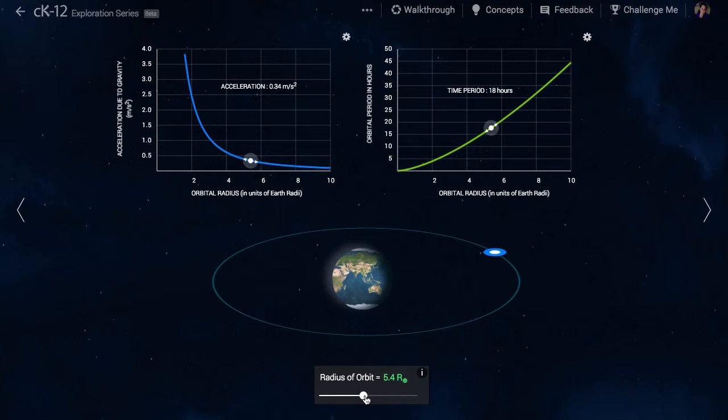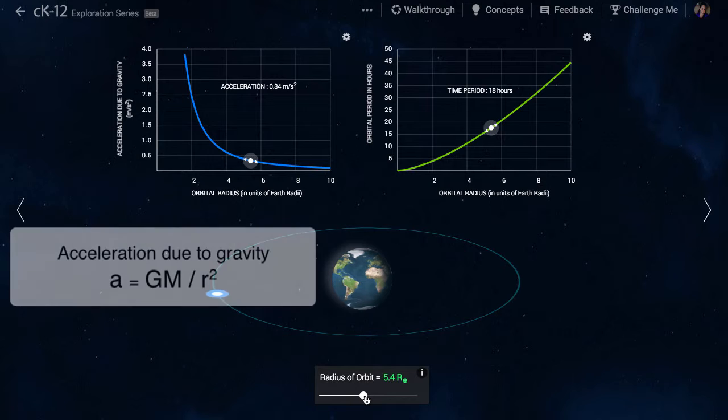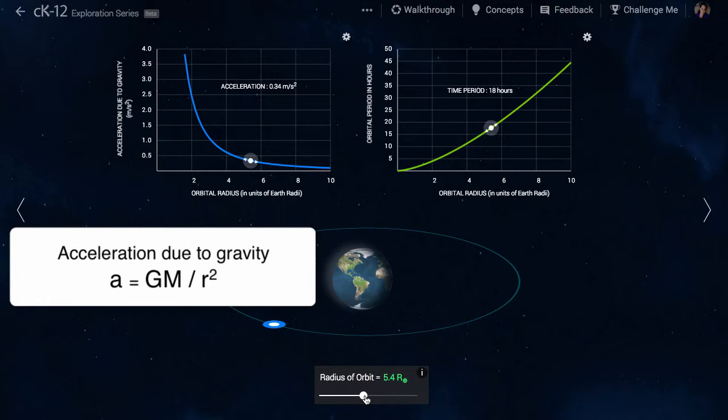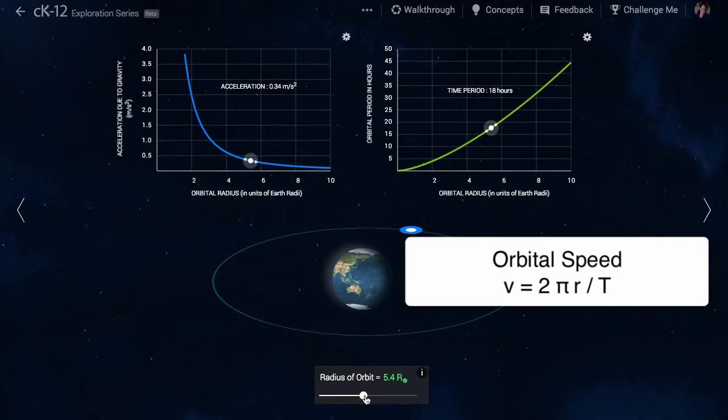For an object in circular motion, the acceleration is speed squared divided by circular radius. The acceleration due to gravity is a product of the universal gravitational constant and the mass of the Earth divided by the square of the circular radius. The speed is a ratio of the circumference of the orbit to the period of orbit. This can be thought of as just distance traveled over time for one orbit.